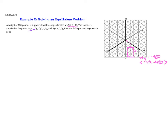Now we have P which is at (2, 0, 0), so x is 2 and then zero. That is P. Then we have Q which is at x=0, y=4, and z=0. This is Q. And then we have R which is at (-2, 0, 0). We have ropes attached to this weight. I'm going to rename these: P will be u, Q will be v, and R will be z.